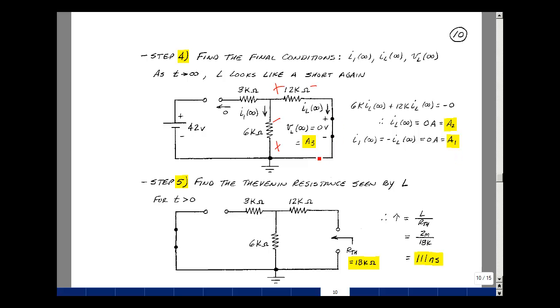With the inductor being a short again, the value of the voltage as T approaches infinity is equal to A3 plus B3 times E to the minus infinity over tau, and that's just equal to A3. So that can solve for my constants A and B.